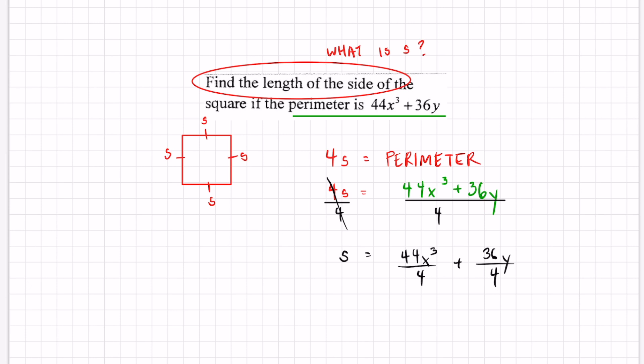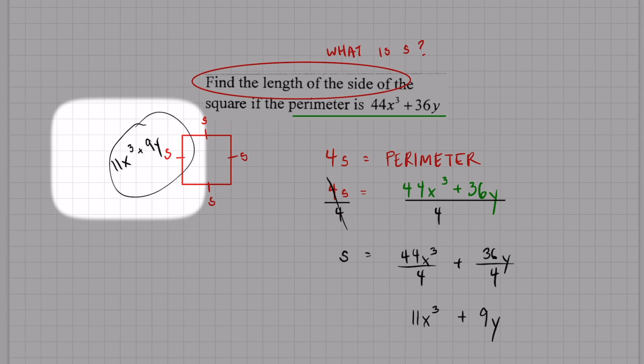And the last part we just got to simplify that and we got our side length. 44 over 4 is just 11x³ plus 36 over 4 is 9y. Each one of these side lengths is going to be 11x³ + 9y. You can even check if you add four of those up you will get the same perimeter given in the word problem.